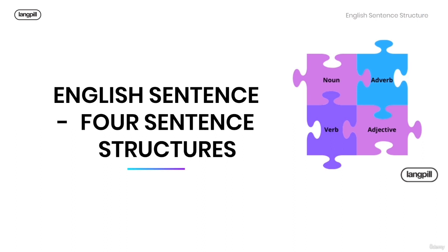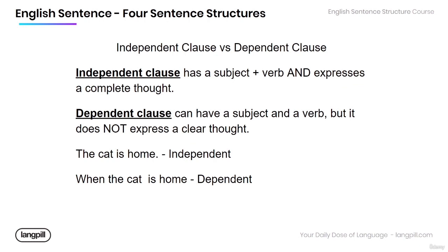In this lesson, we're going to cover the four sentence structures — the main structures that you can make with a sentence. Before we do that, you need to know the difference between an independent clause and a dependent clause. An independent clause is a sentence that has a subject and a verb, and expresses a complete thought. A dependent clause also has a subject and verb, but it does not express a clear, complete thought.